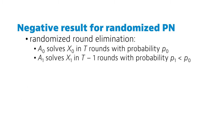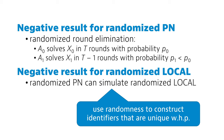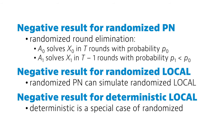So we have a negative result for tree coloring in the randomized PN model. But we wanted to understand it in the local model. Well, if you had a fast randomized algorithm A for the local model that you would like to run in the PN model, you could first pick large enough random labels and use them as unique identifiers. So you could simulate A in the randomized PN model, and you would get an equally fast randomized PN algorithm with almost the same success probability. And we concluded that randomized PN algorithms can't run in sub-log* time, so the same has to hold for randomized local algorithms too. Deterministic local algorithms are just a special case of randomized local algorithms, so they can't find a coloring in sub-log* time either.